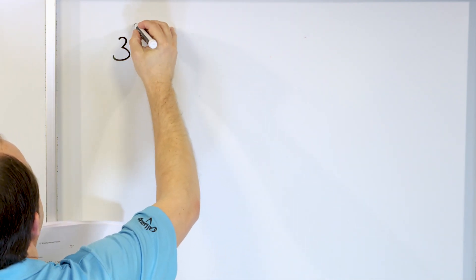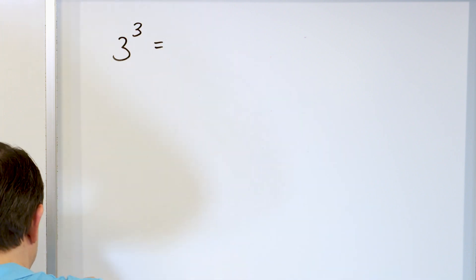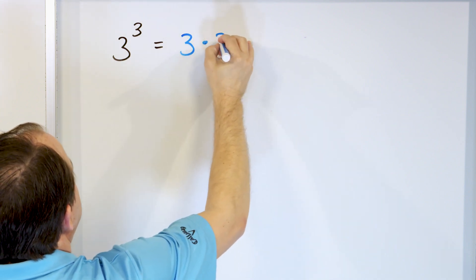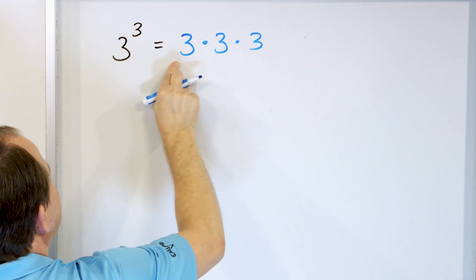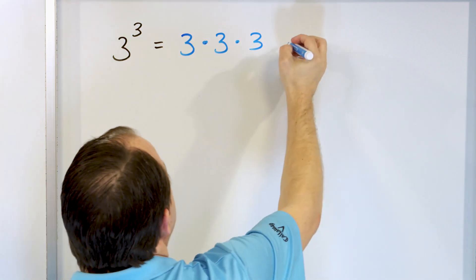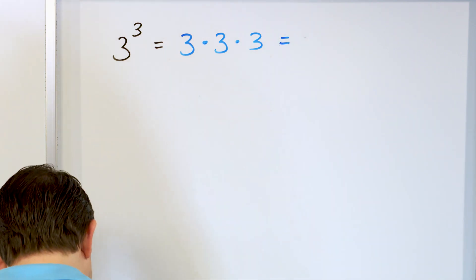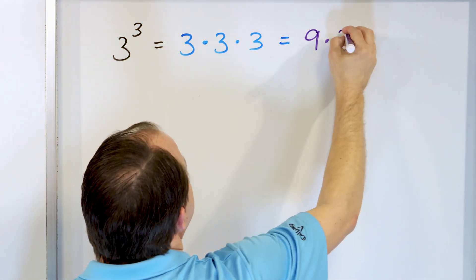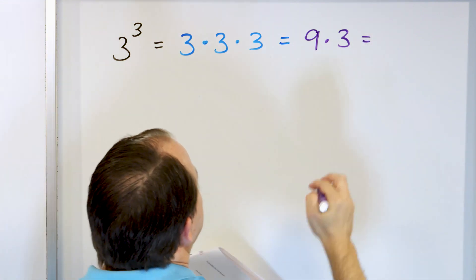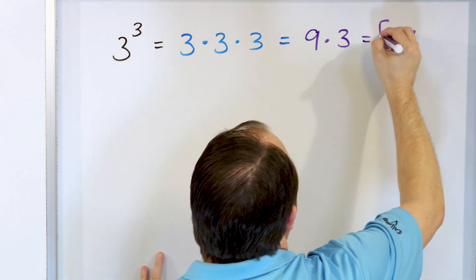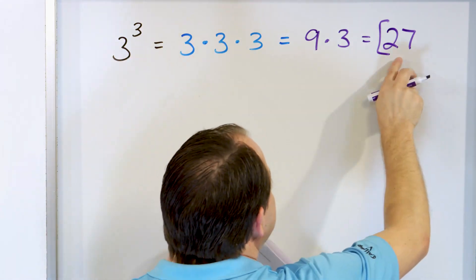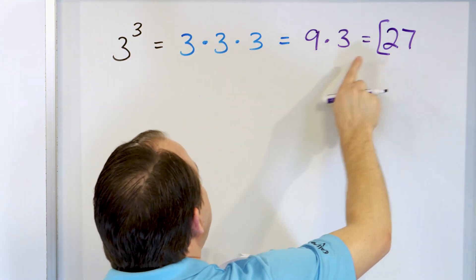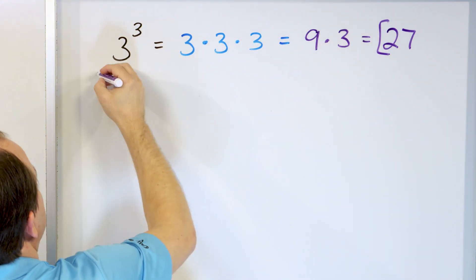What about 3 to the power of 3? It means you take the bottom number 3 and you multiply it by itself, and we have to do that 3 times because the power is 3. When we get the answer, we multiply left to right. 3 times 3 is 9, but I still have to multiply by this final 3. 9 times 3 is 27. So the answer to 3 to the power of 3 is 27. These two things are interchangeable — anytime you see this it means that, and it's a shortcut way of writing out all of this multiplication.